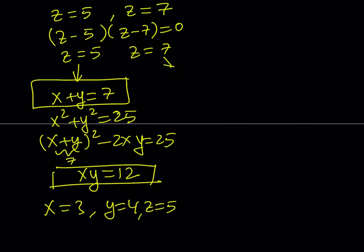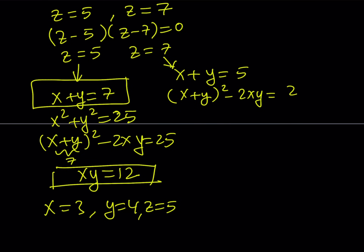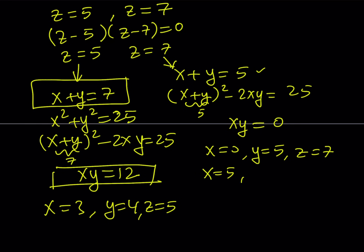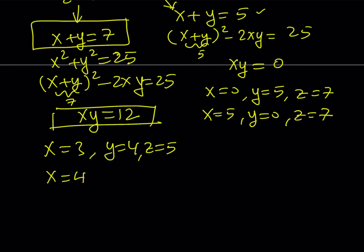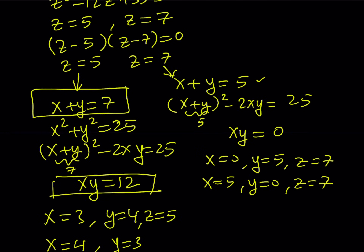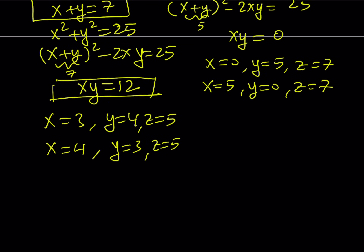If z equals 7, then x plus y equals 5. Again writing x squared plus y squared as (x plus y) squared minus 2xy equals 25, and since (x plus y) squared is 25, this gives xy equals 0. So either x equals 0 and y equals 5, or x equals 5 and y equals 0, with z equals 7 in both cases. That gives us the solutions (0, 5, 7) and (5, 0, 7).